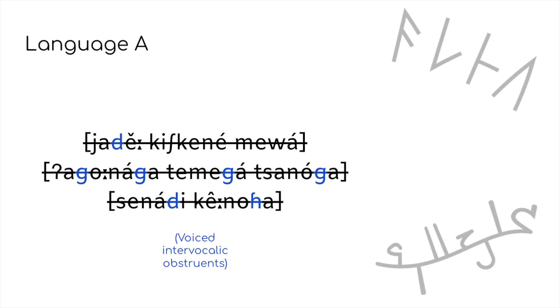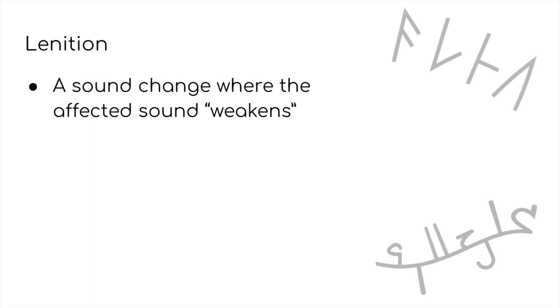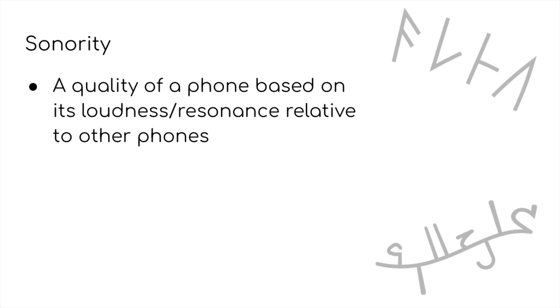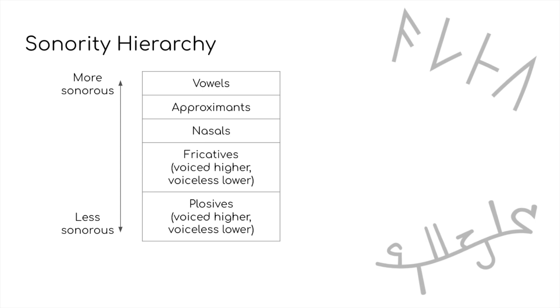Intervocalic voicing is also a subtype of our next category of sound changes, lenition. Lenition refers to any sort of weakening of a given sound. What exactly weakening is can take a couple of different forms, so let's look at some examples to illustrate this. First, looking at the intervocalic voicing, this involves moving the sound up on what's called the sonority hierarchy, which ranks sounds by sonority. Sonority is a loosely defined feature that involves relative loudness of the sound and or its resonance. But in any case, we have voiceless plosives at the bottom and vowels right at the top. In this type of sonorizing lenition, the weakening refers to the sound moving up on the sonority hierarchy.